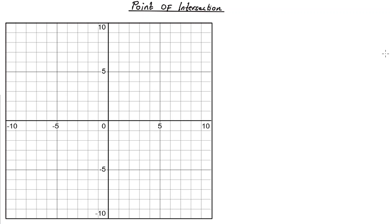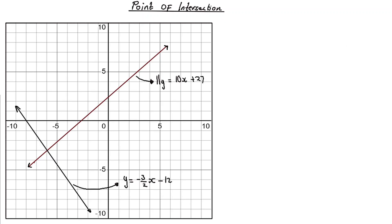In analytical geometry, there's this special point that we call the point of intersection. It's basically where non-parallel lines meet. Looking at these two lines, let's call this red line 'line one' and the black line 'line two' or equation number two. These two lines are intersecting at this point — let's call it point A.